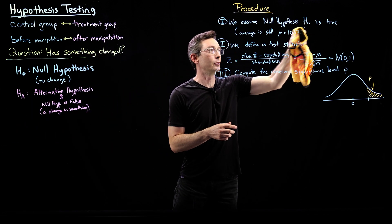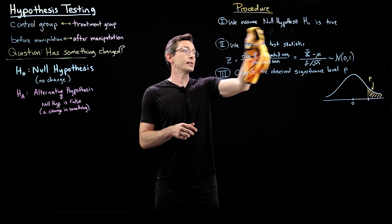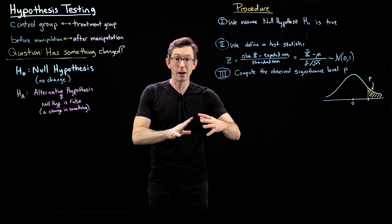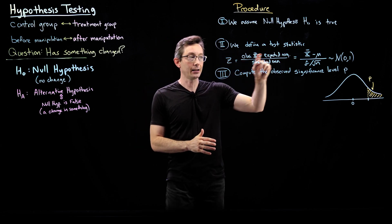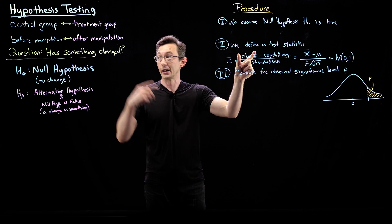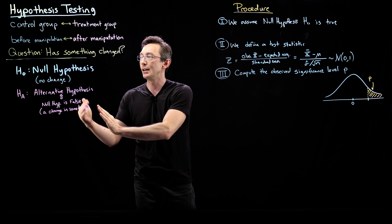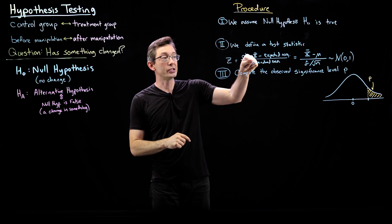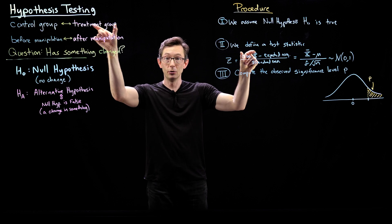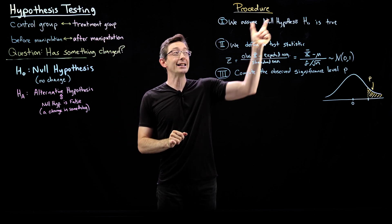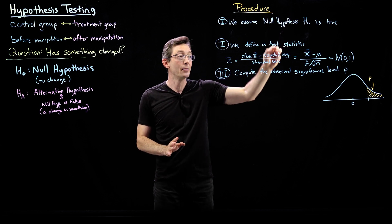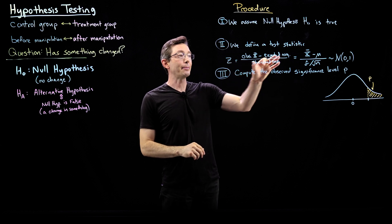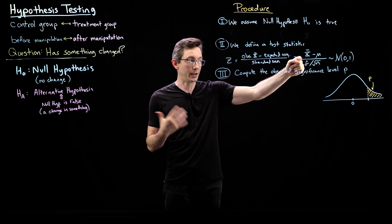You assume that the null hypothesis is in fact true — this is still from my last example where we had the website data. Then, based on your observed data from the treatment group or your new observed data after you think something has changed, you define a test statistic of the observed change. For example, if I'm assuming the average value of something has shifted because of my treatment, then I would take my observed average X-bar, minus the expected average given that the null hypothesis is true. If I assume the null hypothesis is true, my expected average is the same as my previous average or the average of my control group, and I divide that by the standard error, which is a calculable quantity.